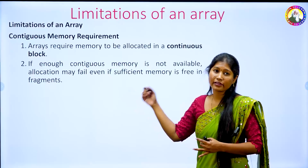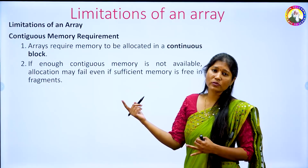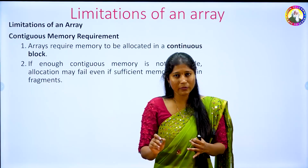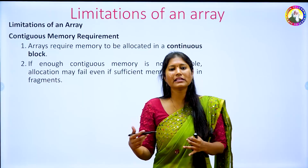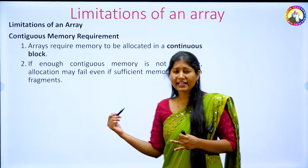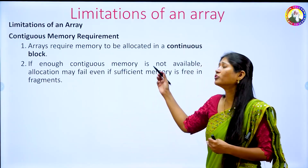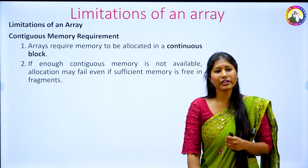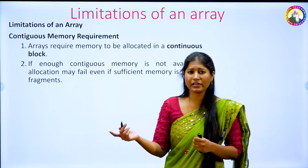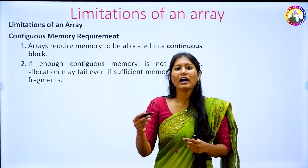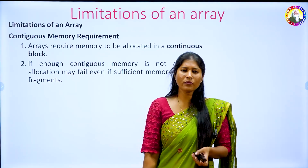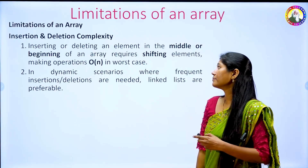To summarize so far: the first limitation is fixed size, which means static memory allocation — I cannot increase it whenever required. The second limitation is contiguous memory allocation — even if free space is available somewhere, I cannot use it because an array requires continuous memory.